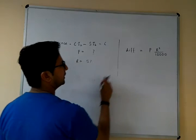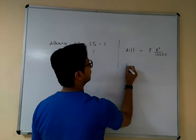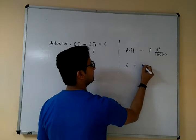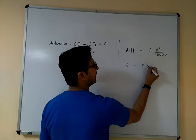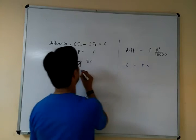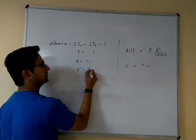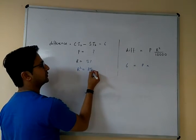What will be the difference? The difference is 6, and it equals P multiplied by R squared over 100 squared. With R equal to 5, that gives P times 25.